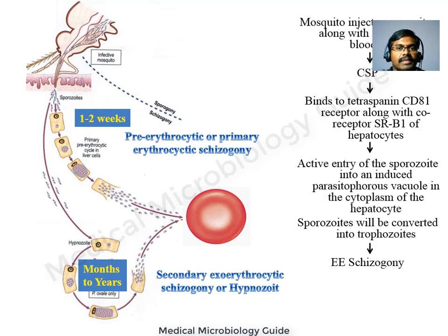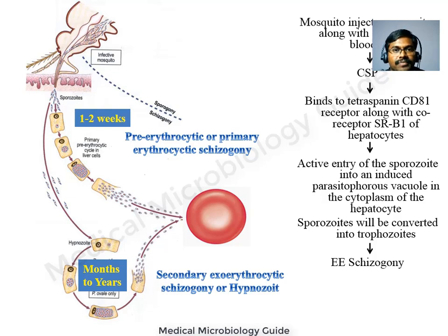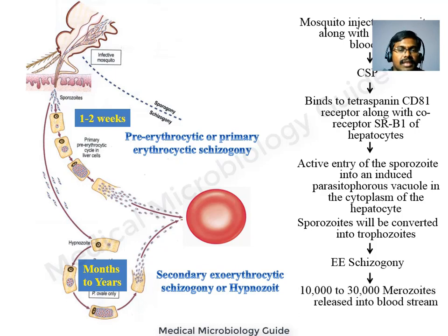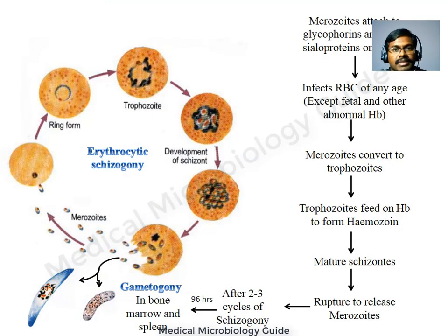In some malaria parasites like P. ovale and P. vivax, the hepatic stage remains dormant. These dormant forms are called hypnozoites. Hypnozoites can reactivate after a long time and cause relapse. Relapse is seen in P. vivax and P. ovale because they have hypnozoites. When hypnozoites are reactivated, they undergo secondary exoerythrocytic schizogony — it is secondary because the parasite was already present in the body, and exoerythrocytic because it occurs in liver cells.